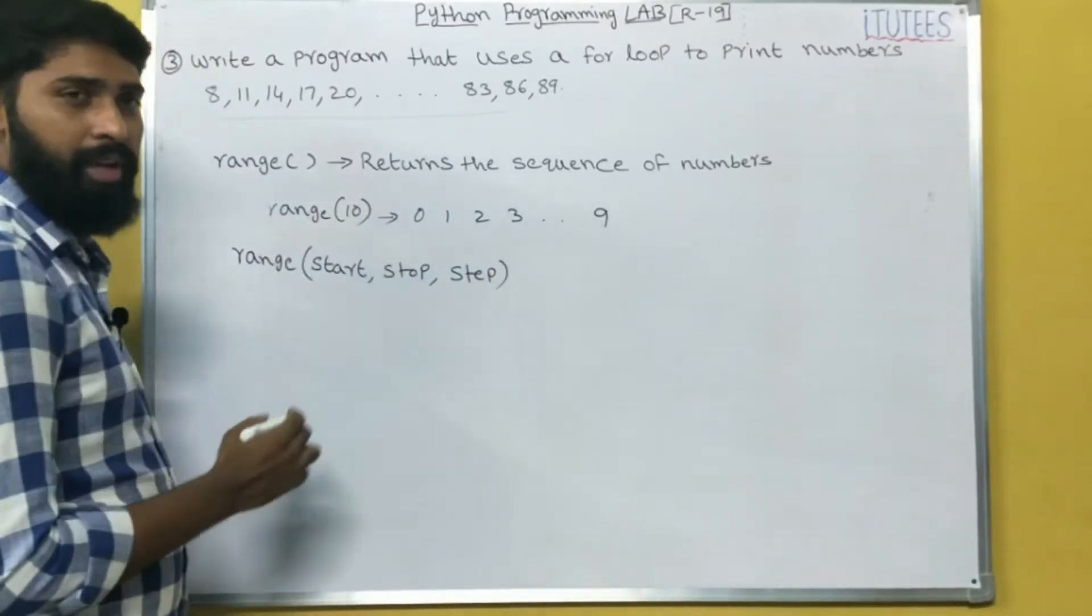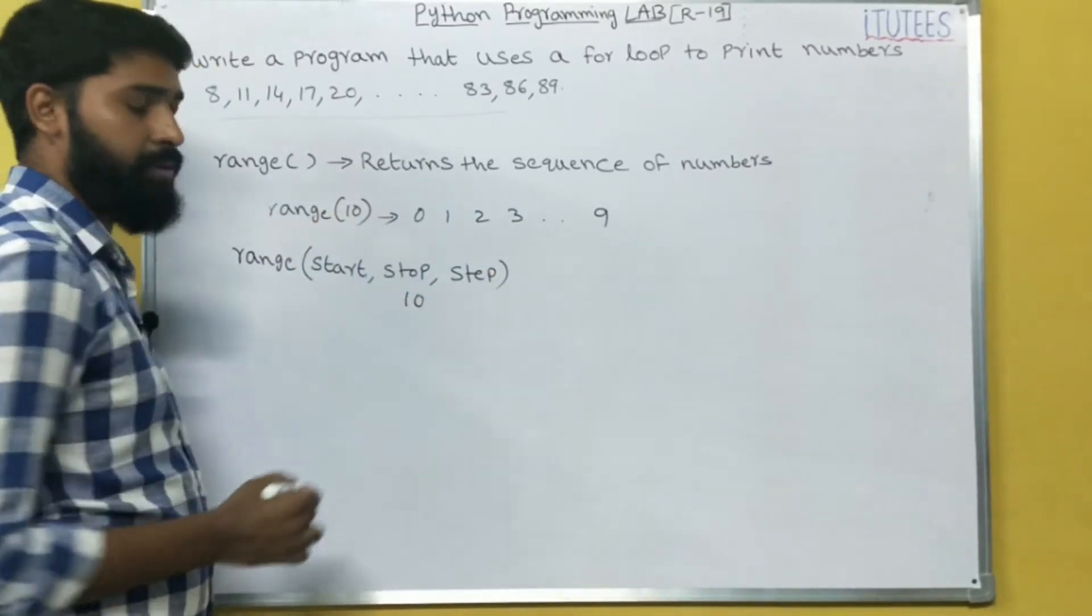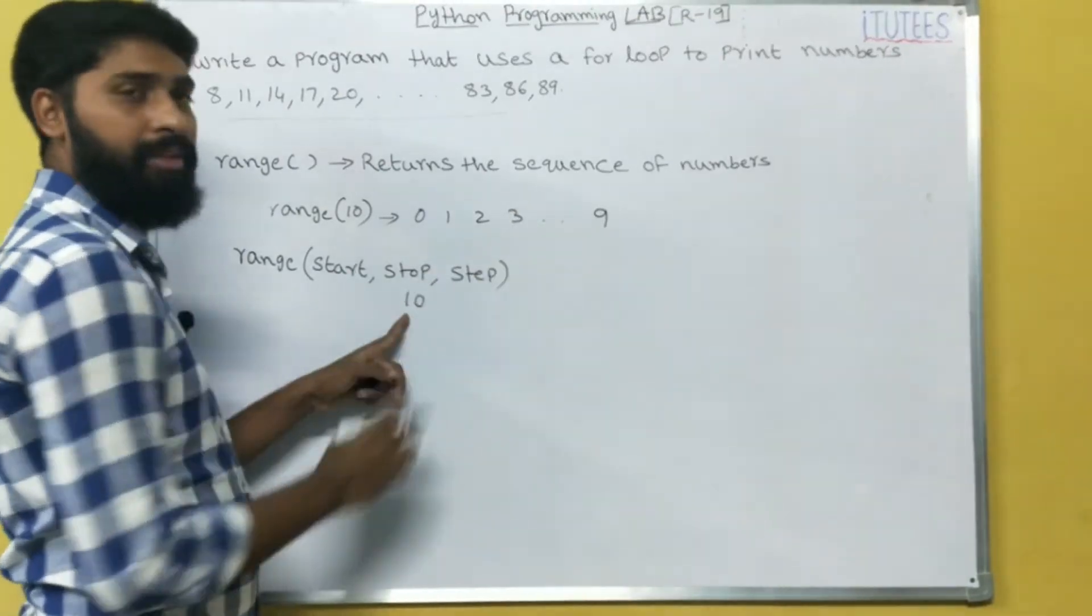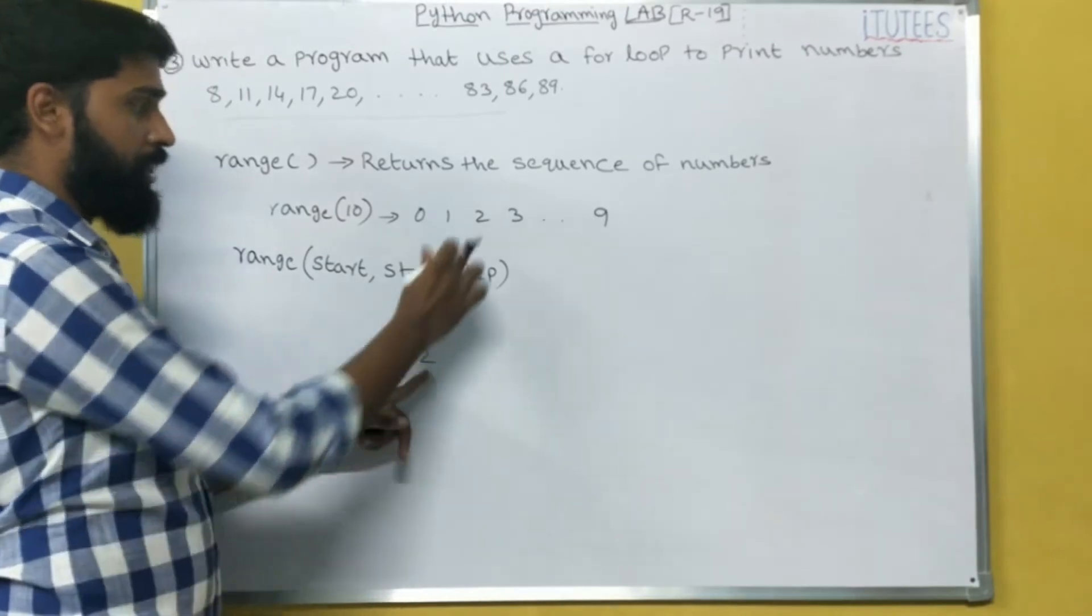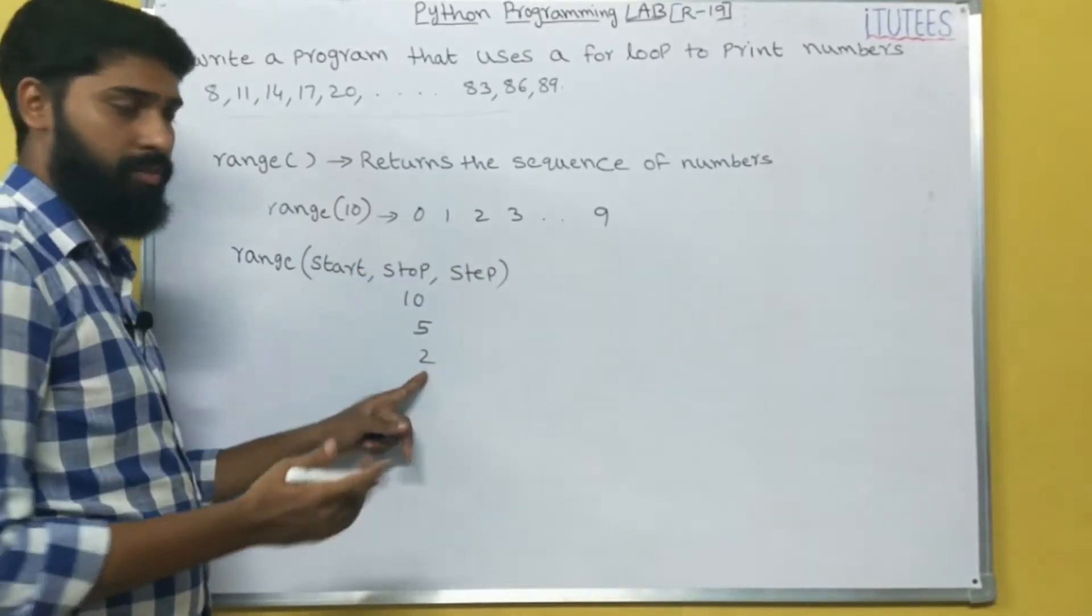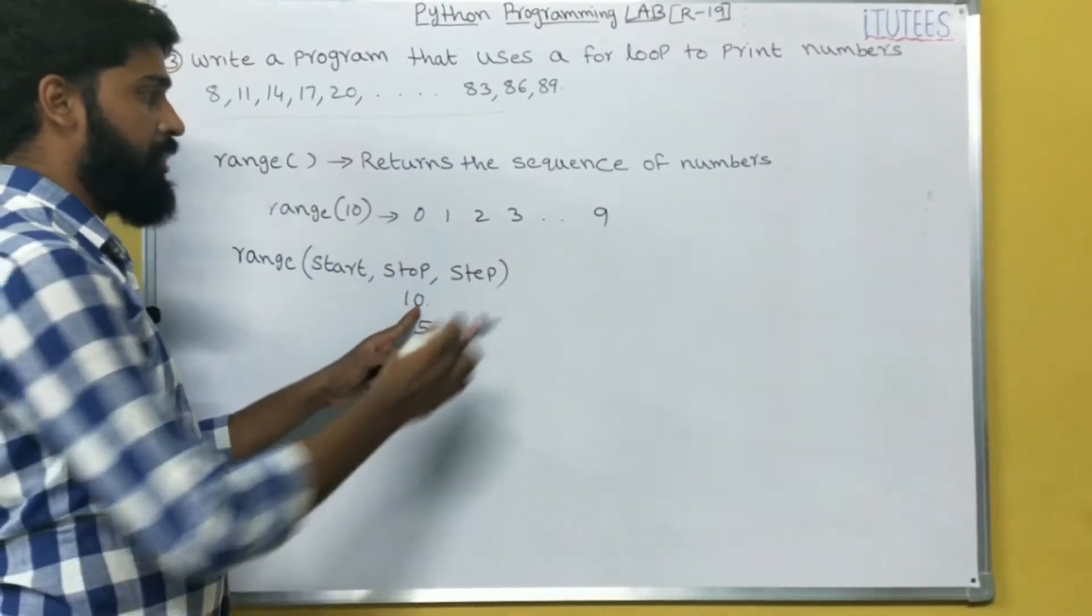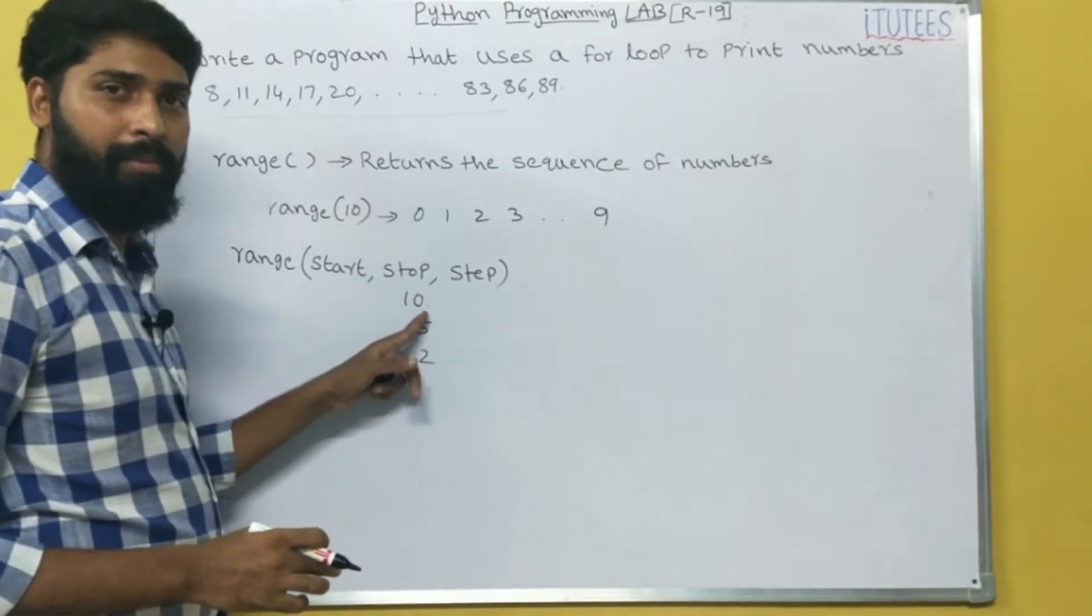For example, range of 10. That means that is the stop. So 10 means 9. If it is 5, the ending number is 4. If it is 2, that is 1. That means n minus 1. Here I specified 10, so it prints up to n minus 1, 9.